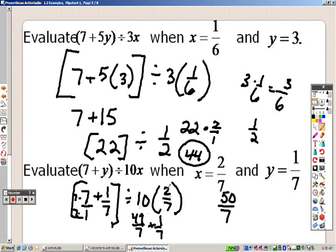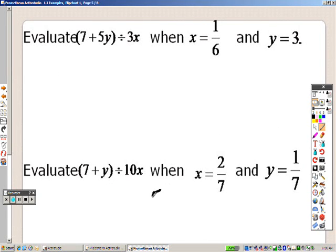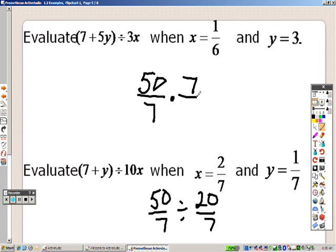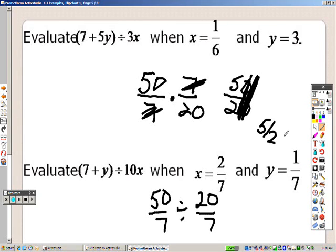This right here, I multiply 10 over 1 times 2 over 7 and that will give me 20 over 7. Now just like I told you before, we have 50 over 7 divided by 20 over 7. When you have fractions and you're doing division, it's like multiplying by the reciprocal. So it's like saying 50 over 7 times 7 over 20 because I flip it. The 7's cancel. I end up with 50 over 20 and I can simplify that by 10. So your final answer is 5 over 2.